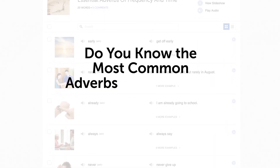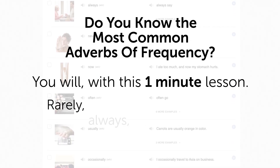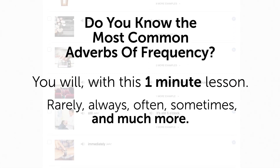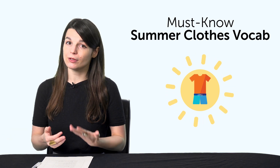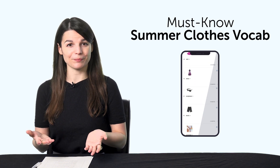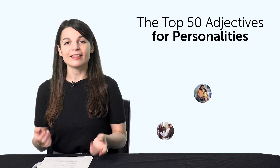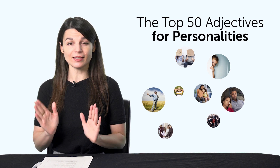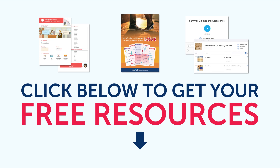Third, do you know the most common adverbs of frequency? You will with this one-minute lesson. Learn how to say rarely, always, often, sometimes, and much more in your target language. Fourth, must-know summer clothes vocab. Do you know how to say t-shirt or shorts in your target language? If you don't, you can learn how. This one-minute lesson will give you all the words you need for summer clothing. Fifth, the top 50 adjectives for personalities. Can you describe your personality? This next bonus teaches you 50 must-know adjectives for personalities, so you can talk about yourself in your target language. To get your free resources, click the link in the description below right now. They're yours to keep forever.